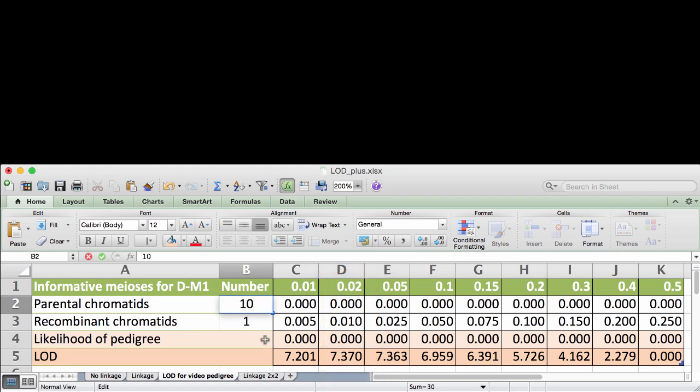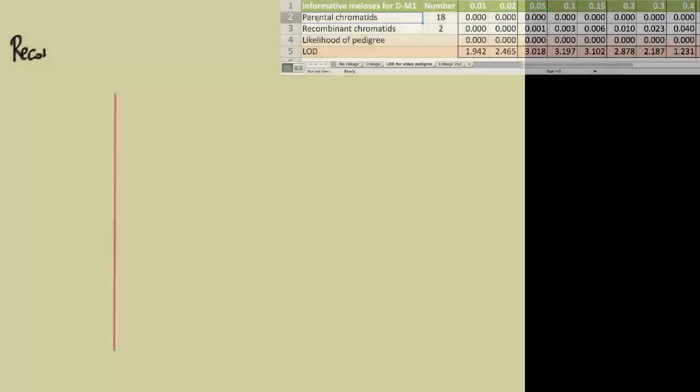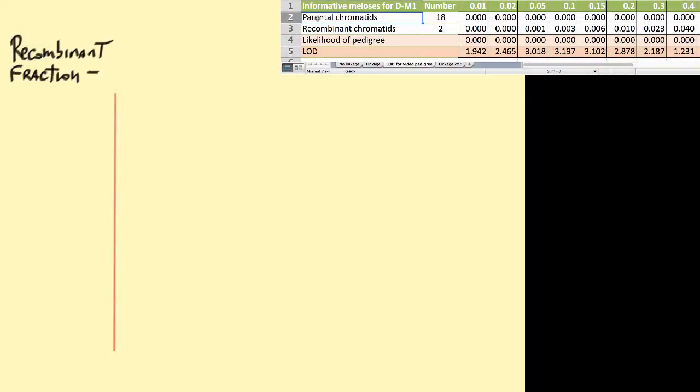If I lower my input to 10 parental and 1 recombinant chromatid, my maximum LOD is too low for significance. Let's take the input of 8 and 2 and tabulate the data.